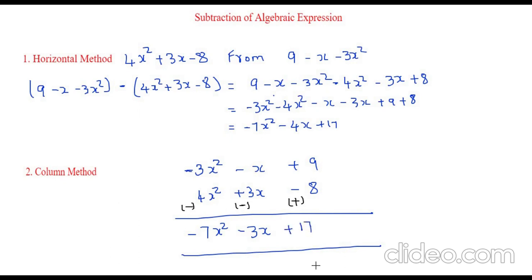Isn't it very easy? We just use two methods: horizontal method and column method. In horizontal method, we do it inside a parenthesis, then we remove the parenthesis, we group the like terms, and then we add and subtract. But in column method, we write the expressions one below the other and change the signs of the bottom expression.